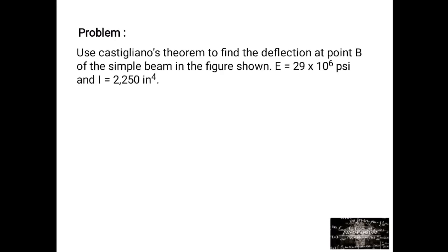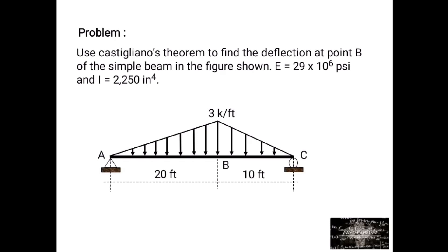Welcome again to our tutorial. We have a problem: use Castigliano's Theorem to find the deflection at point B of the simple beam in the figure shown. E is equal to 29 times 10 to the power of 6 psi and I is equal to 2250 inches to the fourth. We have a simple beam subjected to triangular loading.